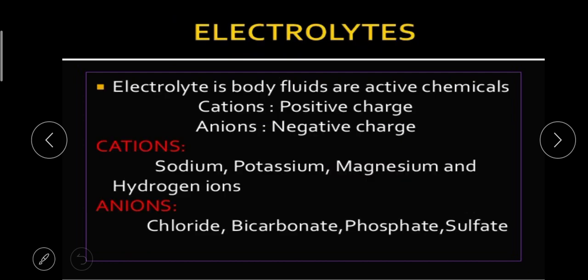Next, electrolytes. Electrolytes in body fluids are active chemicals. There are two types: cation and anion. Cations are positively charged and anions are negatively charged. Examples of cations are sodium, potassium, magnesium, and hydrogen ions. Examples of anions are chloride, bicarbonate, phosphate, and sulfate. These are the electrolytes present in the body.